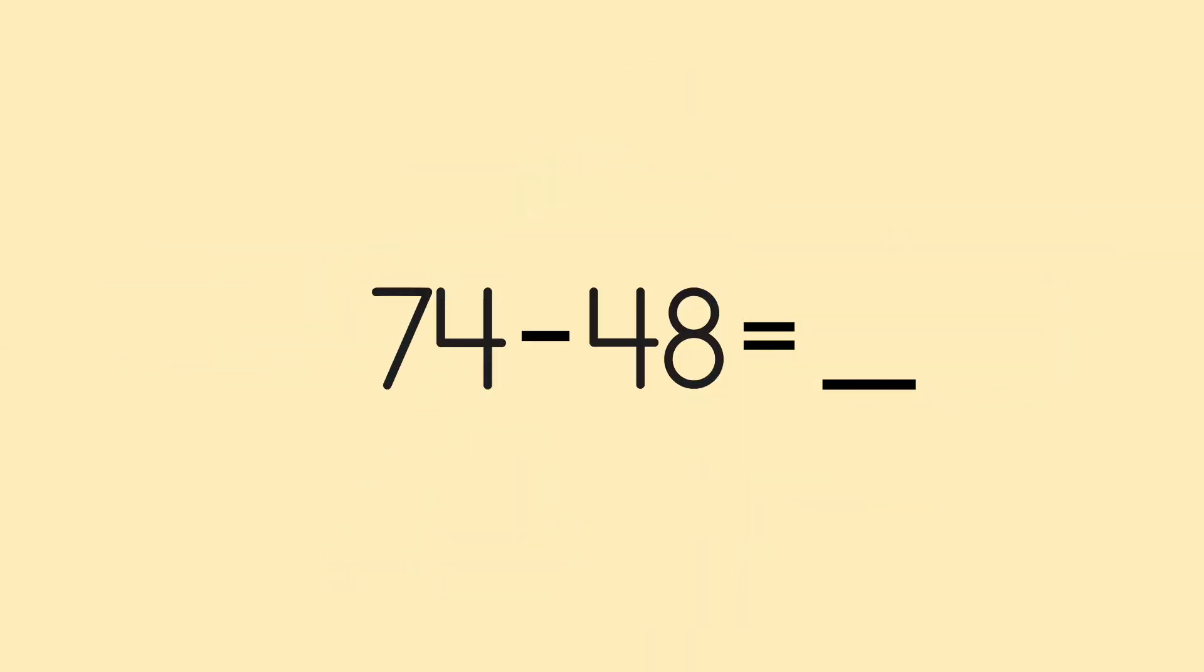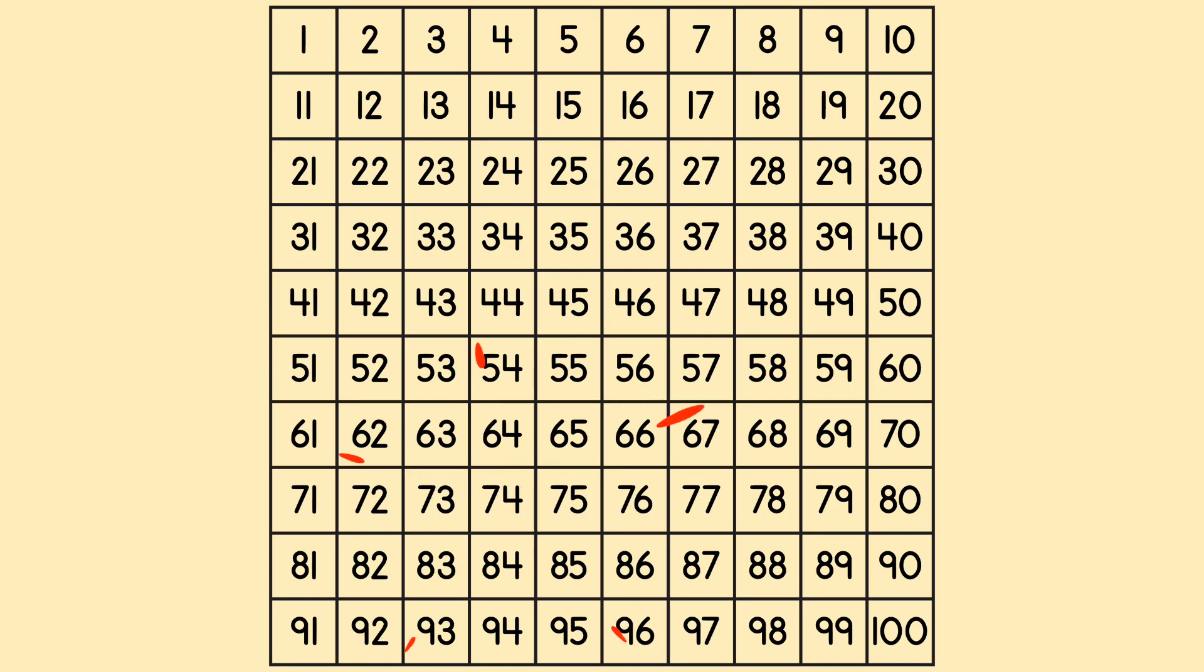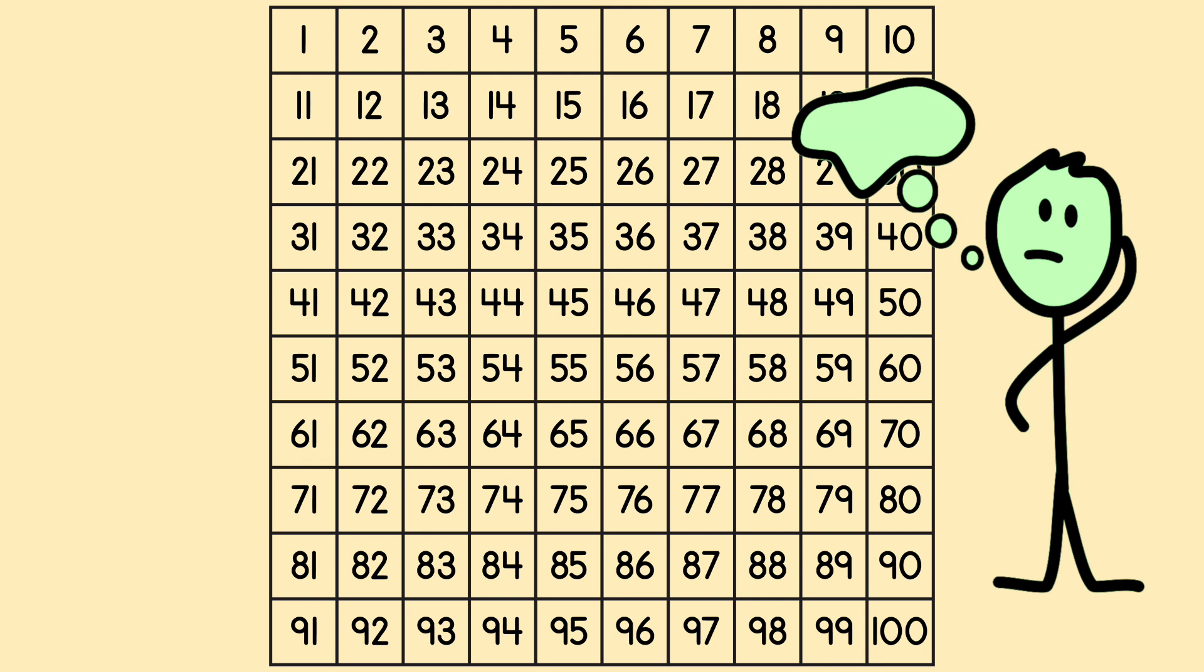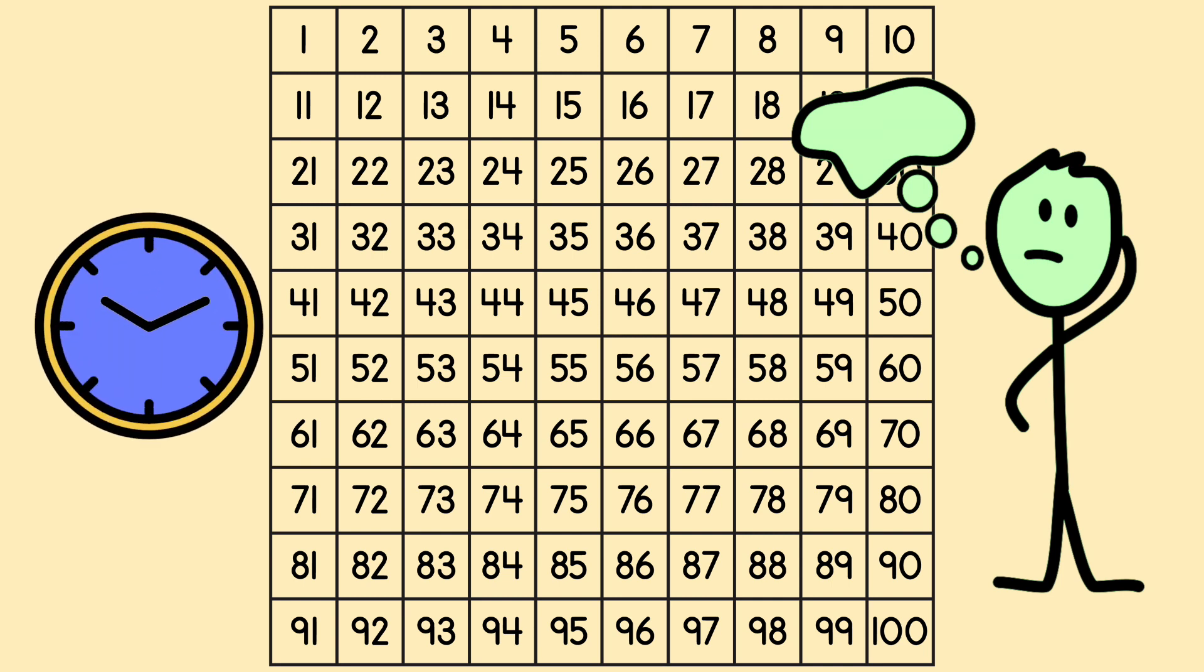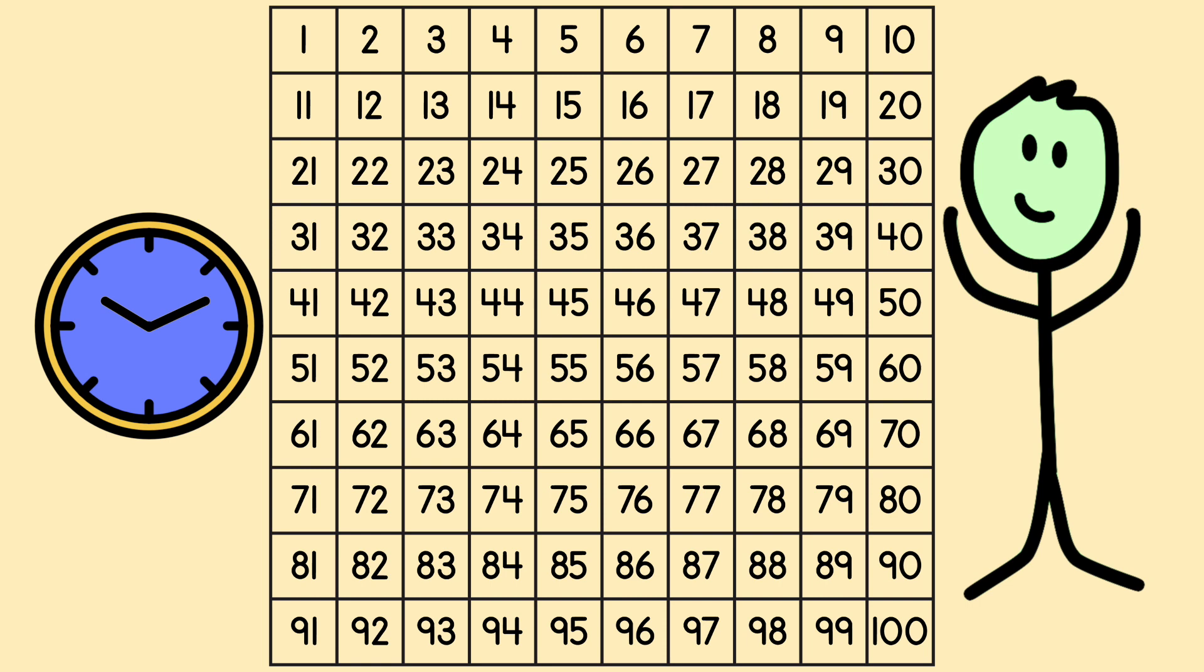The first number is 74. So Kelvin found 74 on the hundreds chart. But he was subtracting 48. Counting back 48 would take a long time. Maybe there was a shortcut he could use.